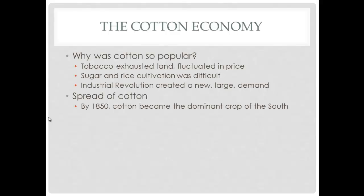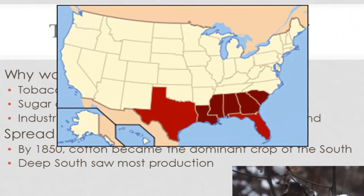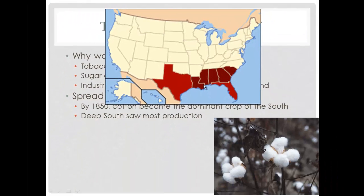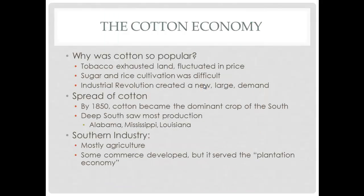So we have the spread of cotton and plantations. By 1850, cotton became the dominant cash crop of the South, and the Deep South saw most of this production — states like Alabama, Mississippi, Louisiana, shown in the darkest red on the map — which had the largest slave populations and most cotton output. Southern industry was mostly agriculture, and any commerce that developed served the plantation economy.